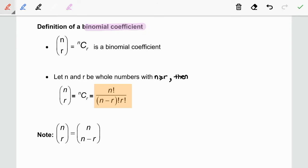There are many notations used for the binomial coefficients, but the most commonly used are these two: n r in the matrix form or n C r. All of these read as n choose r.